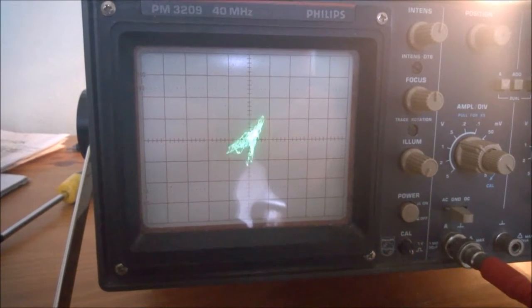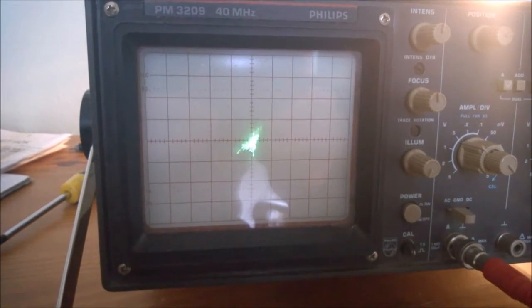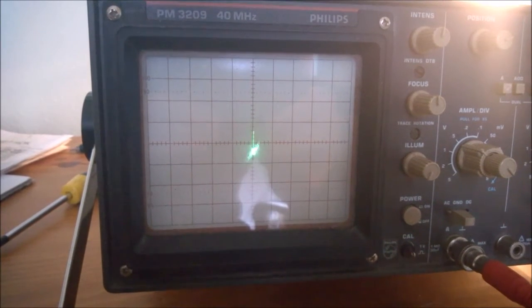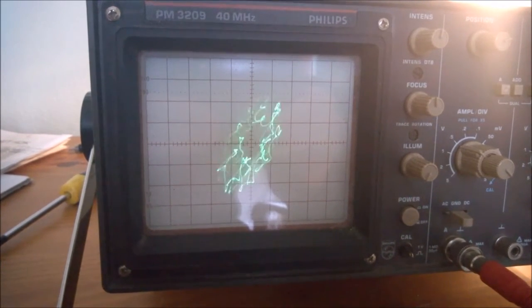Now first we need a sine wave on our horizontal deflection channel, and a cosine wave on our vertical deflection channel. Together, they add up to a beautiful circle.